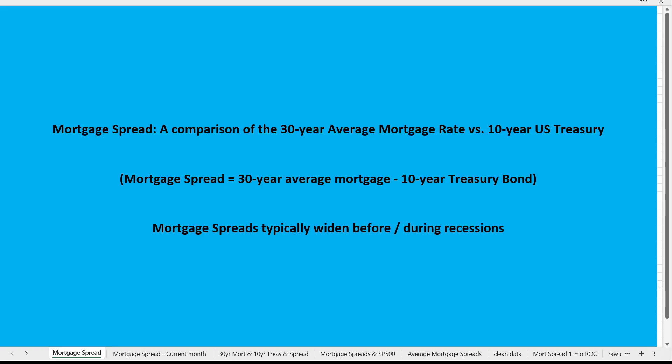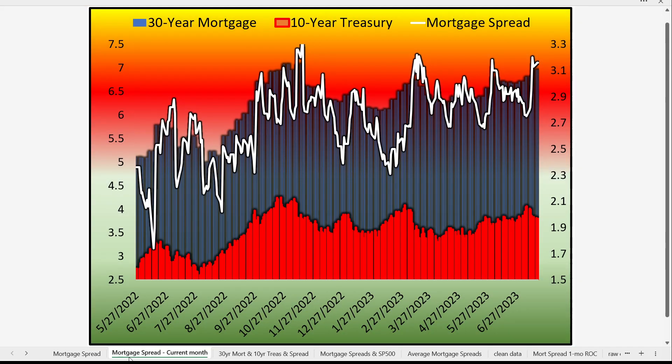Mortgage spreads typically widen before or during recessions. When banks sense trouble on the horizon, they add a premium to mortgage rates for insurance. For example, if the 30-year bond is at 5%, the average mortgage might normally be 5.5%, but they'll charge 5.75% or 6% because they see extra risk — the risk that a consumer may run into economic difficulty and be unable to repay. That's why the mortgage spread reflects the extra insurance banks are adding on.